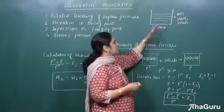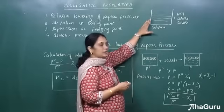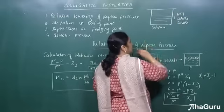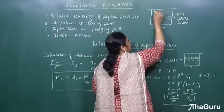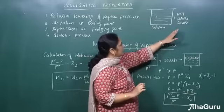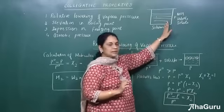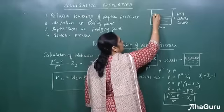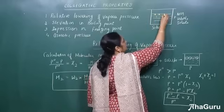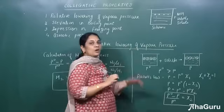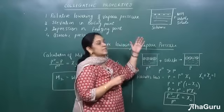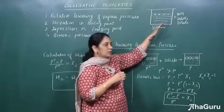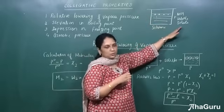What will happen now? Suppose this solvent has some vapor pressure. Let us take a closed beaker. When I add a non-volatile solute to this solvent, the solute molecules will occupy positions on the surface of the solvent. Now, what will happen to the vapor pressure?